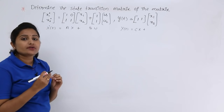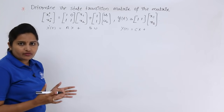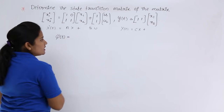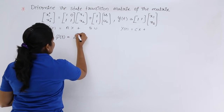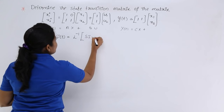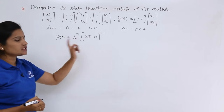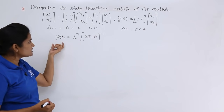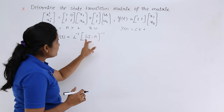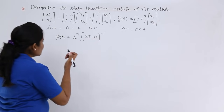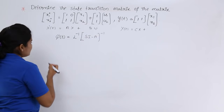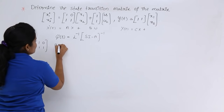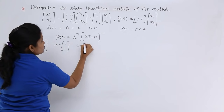We need to find the state transition matrix. From the previous video, the state transition matrix φ(t) is given by the inverse Laplace transform of (sI - A) inverse. If we know (sI - A) inverse, we can easily find the state transition matrix by taking the inverse Laplace transform. The known values are: A = [1, 0; 1, 1], B = [1; 1], and C = [1, 1].